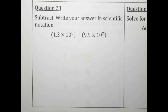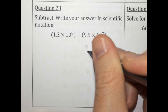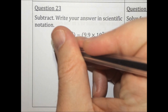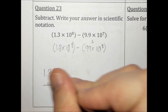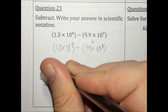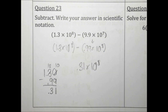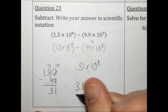Subtract and write your answer in scientific notation. Let's make the exponents match — let's make this 10 to the 8th, which makes the number out front 0.99. Since the exponent got bigger, the number out front needs to get smaller. Not changing the first number. Now that the exponents match, we can subtract and we get 0.31 times 10 to the 8th. That's not in scientific notation yet, so let's make this 3.1 — the number got bigger, so the exponent needs to get smaller, giving us 3.1 times 10 to the 7th.